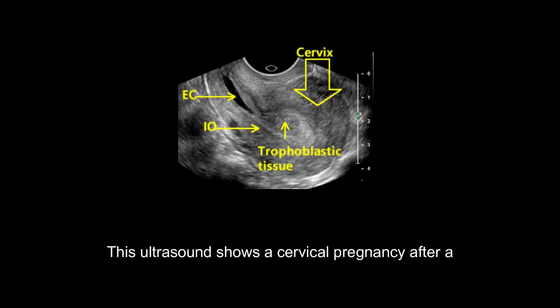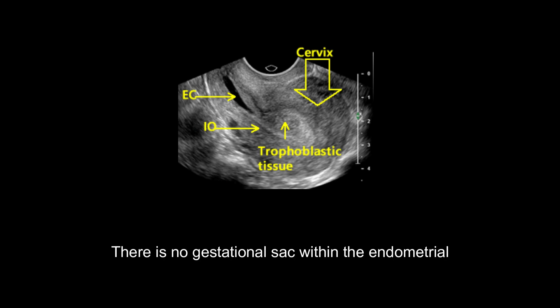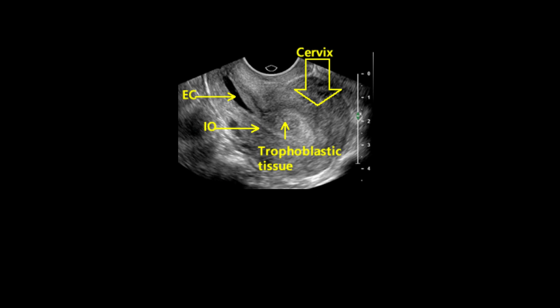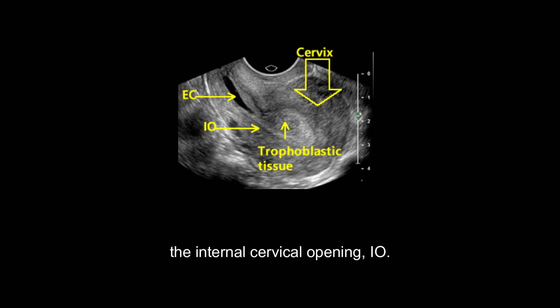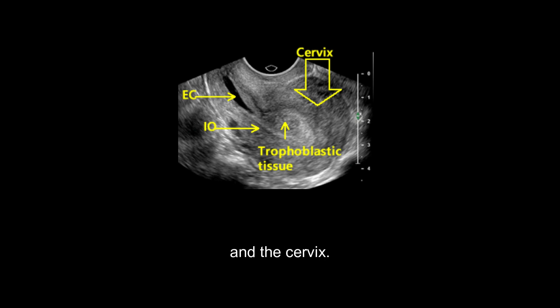This ultrasound shows a cervical pregnancy after a medical injection. There is no gestational sac within the endometrial cavity (EC). The image also shows the general area of the internal cervical opening (ICO). Trophoblastic tissue is visible inside the endocervical canal and the cervix.